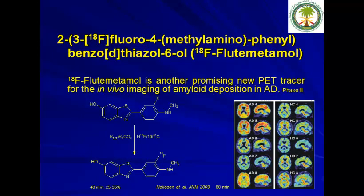Another Alzheimer's disease agent is Flutemetamol, which is in clinical trial phase 3. It gives comparable results to Amyvid; however, Amyvid has received FDA approval while Flutemetamol is still pending. Production of Flutemetamol is also straightforward and uses a cassette system.